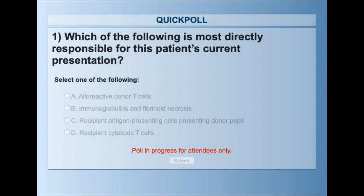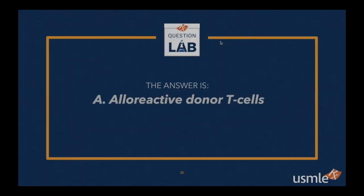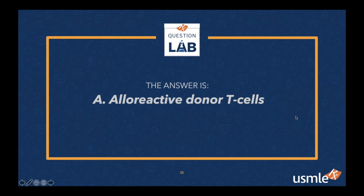Let's take a look and see what you selected for our first question. In first place with 37% was alloreactive donor T cells. In second place, we had recipient cytotoxic T cells. And in close third place, we had recipient antigen-presenting cells presenting donor peptides. The correct answer is A — alloreactive donor T cells — and 37% of you got it right. A challenging question — let me hand it off to Paras so he can explain it.